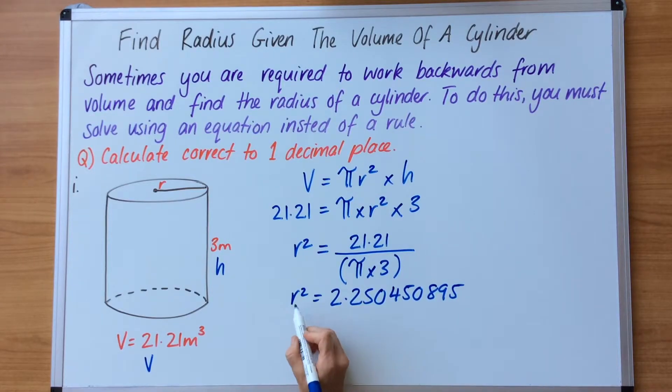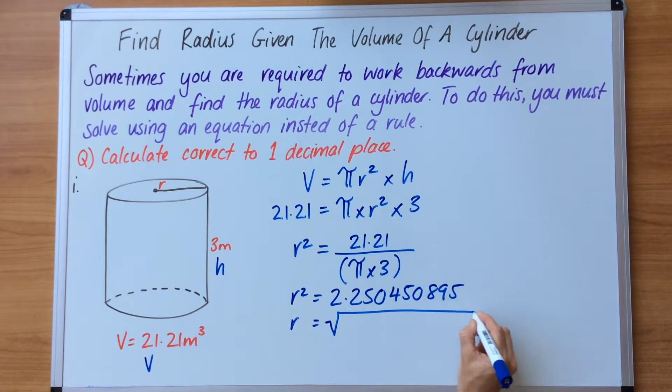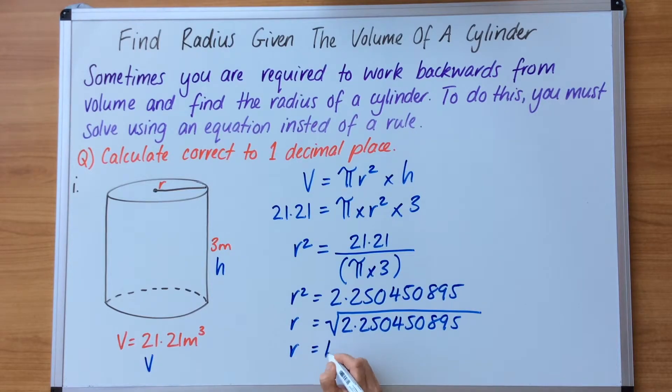From there, because we have r squared, we need to take that number now and we need to find the square root of it. So we put that like that, and we put this number underneath here: 2.250450895. r equals, and we get this number: 1.5001500291.